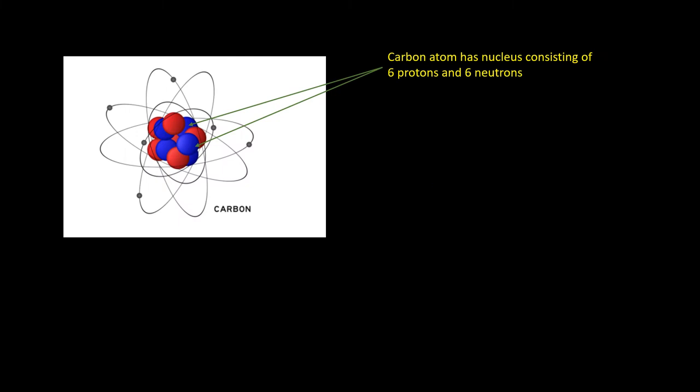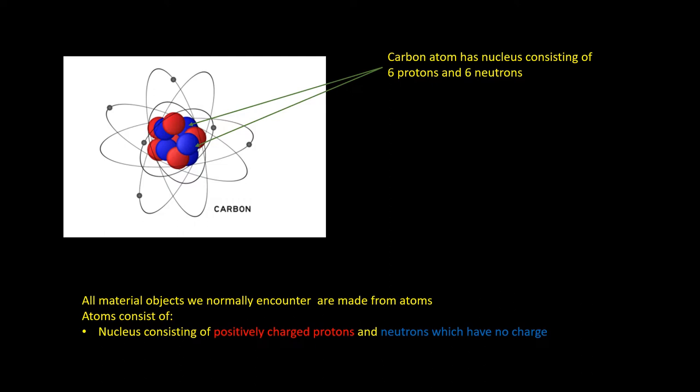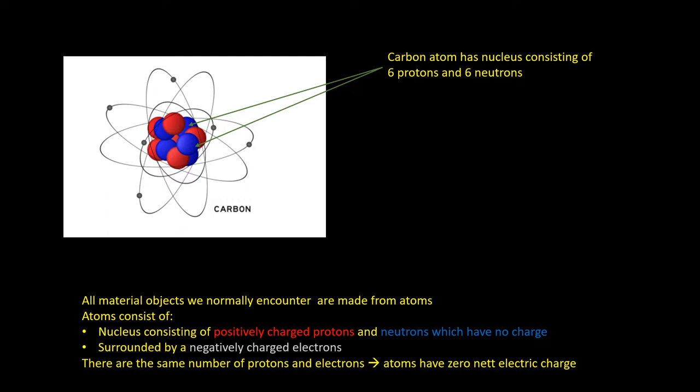All objects we see are made up of atoms. Atoms consist of a nucleus which has positively charged protons and neutrons which have no electric charge. The nucleus is surrounded by a cloud of negatively charged electrons. Because of the same number of protons with a positive charge and electrons with a negative charge, an atom has no net electric charge.